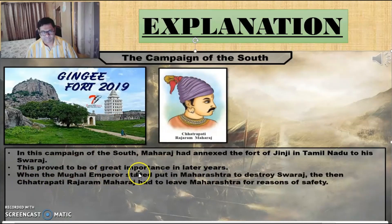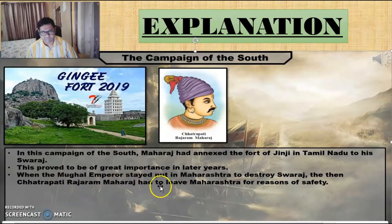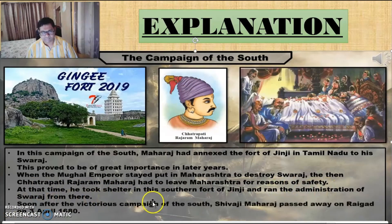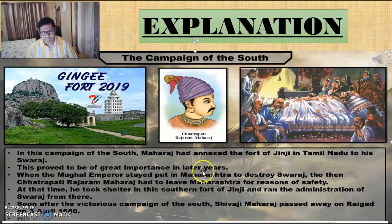The annexation of Jinji proved to be of great importance in the later years. When the Mughals came to Maharashtra to destroy the Swaraj, Chhatrapati Rajaram Maharaj had to leave Maharashtra for his safety and took shelter in Jinji, running the administration of Swaraj from there. Soon after the victorious campaign of the south, Shivaji Maharaj passed away. His death at the age of 50 was a great loss for the Swaraj.